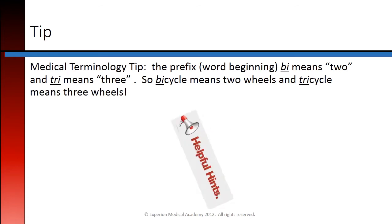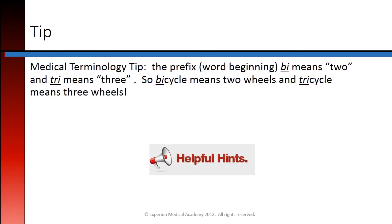The prefix bi- means two and tri- means three. So bicycle has two wheels and tricycle means three wheels. This is going to be important as we progress into medical terminology related to the cardiac system.